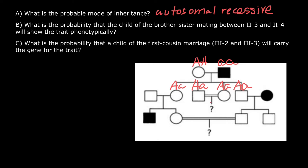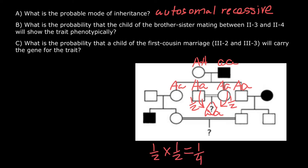The probability that the child of this couple is going to be small a, small a genotype: from the father's side, he can inherit the dominant allele or the recessive allele, so the probability of inheriting the recessive allele is one half. The probability of inheriting the recessive allele from the mother's side is also one half. So one half times one half is going to be one quarter. This is the answer for the second question.